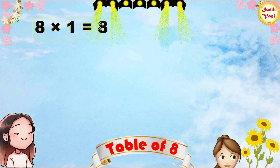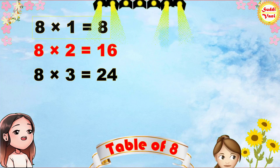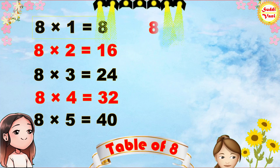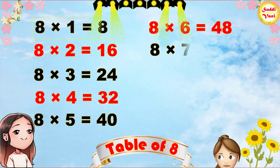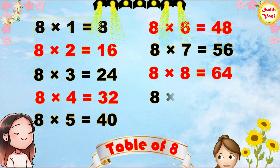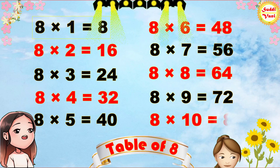8 1's are 8, 8 2's are 16, 8 3's are 24, 8 4's are 32, 8 5's are 40, 8 6's are 48, 8 7's are 56, 8 8's are 64, 8 9's are 72, 8 10's are 80.